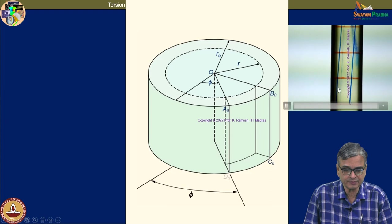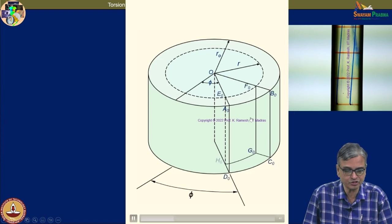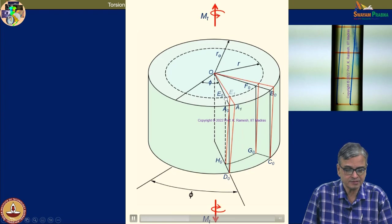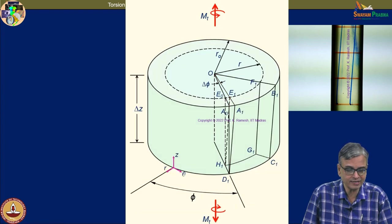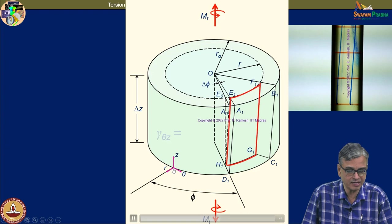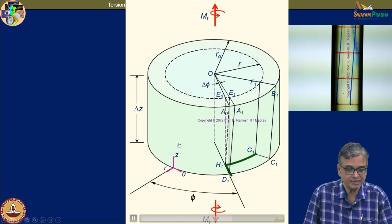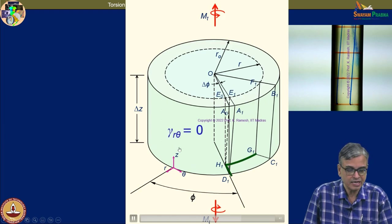The experimental information and systematic drawings show what strain is existing. With the reference axis given as R-θ-z, we have only γ_θz = R dφ/dz.